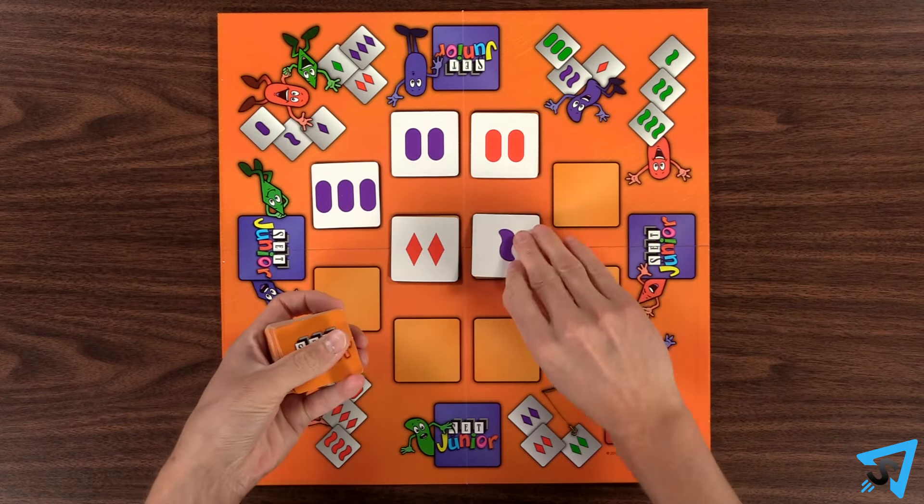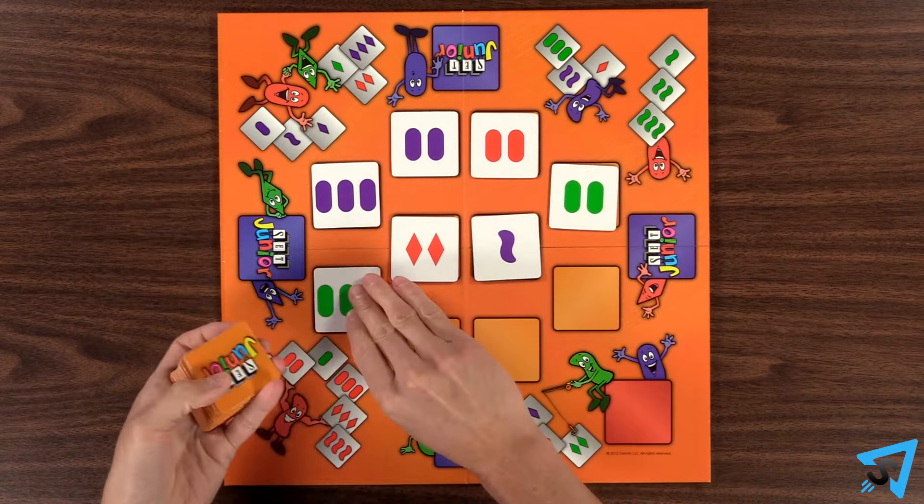Lay out the board with Side 2 face up. Shuffle the tiles and deal one face up to each orange space on the board. Place the rest of the deck face down on the red space.